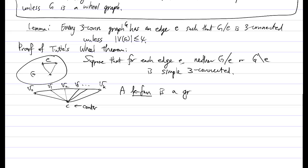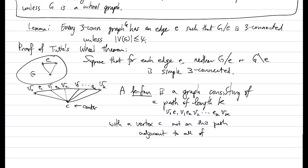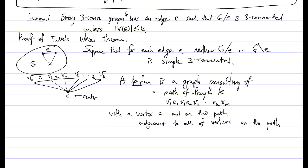A K-fan is a graph consisting of a path of length K: V0, E1, V1, E2, V2, ..., EK, VK, with a vertex C not on this path which is adjacent to all vertices on the path.